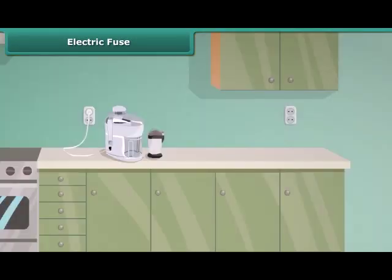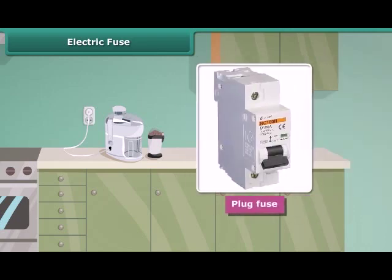Fuses of different kinds are used for different purposes. A plug fuse is used in our houses. The plug fuse consists of two parts, namely the porcelain casing and the porcelain grip. This fuse has a thin wire of tin and lead alloy which has a low melting point. A cartridge fuse is generally used in electrical appliances.